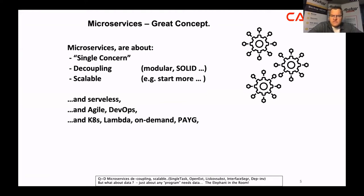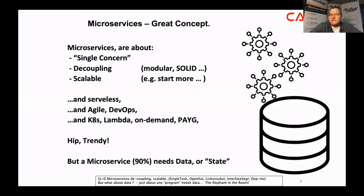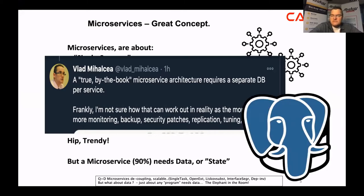Microservices can be deployed on lambdas, on Kubernetes, as an on-demand or pay-as-you-go type of service. They're hip and trendy, but most microservices still need state or data — and this is where the challenge comes in. The database is the big elephant in the room. Vlad Mihalcea, a Romanian guy focused on Java and persistence, raised this point: if every microservice needs a database, how many databases are we going to get, and who will take care of them?